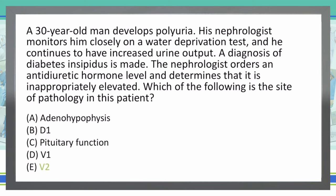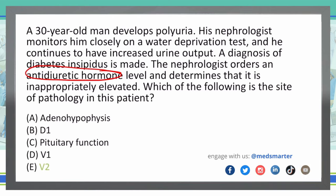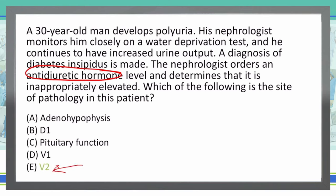And E is the correct answer. This is nephrogenic diabetes insipidus because of this elevated antidiuretic hormone level. If that level were lower, then we would be talking about central diabetes insipidus, and our answer choice would change. But because it's nephrogenic diabetes insipidus, this is a problem with antidiuretic hormone receptors in the actual kidneys themselves, not in the brain or in the central nervous system. So the only receptor in the kidney that has to do with diabetes insipidus with an elevated ADH level has to be E, the V2 receptors.